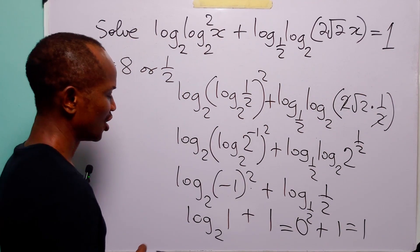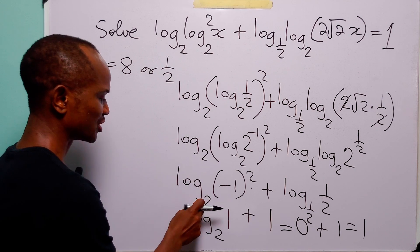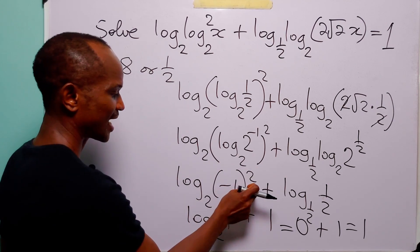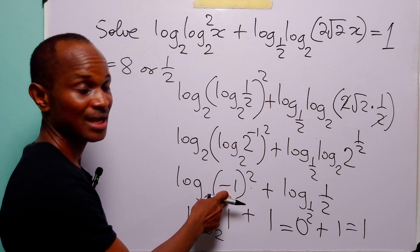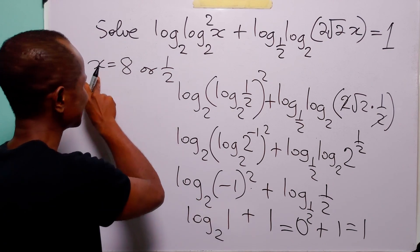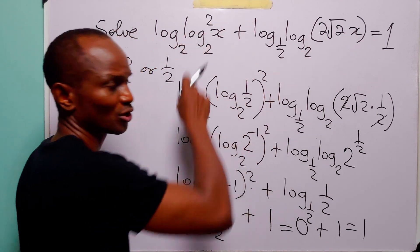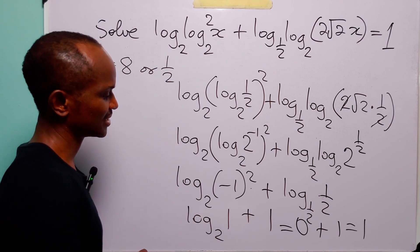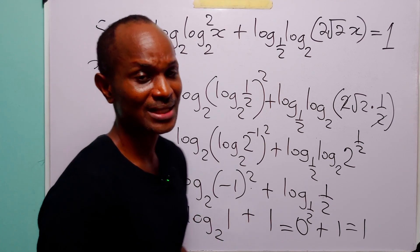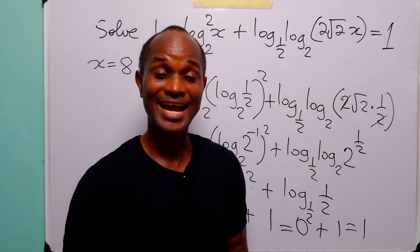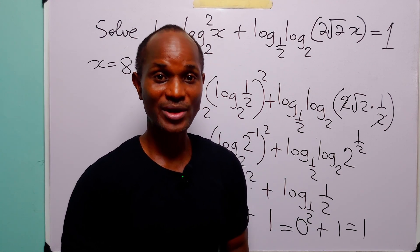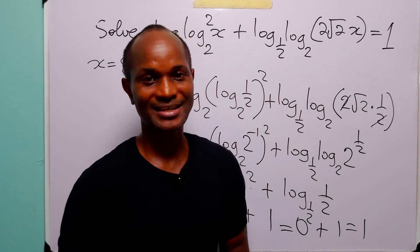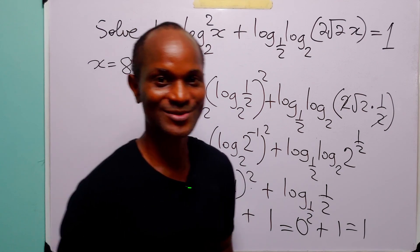But there is a problem. Notice that here we have log to base 2 of minus 1 squared. Regardless of the fact that we squared minus 1, can we really accept x equals half as a real solution to this logarithmic equation? I'd like to hear your thoughts in the comment section. With that, we come to the end of today's exercise. I hope you learned something new. If you enjoy such content, please subscribe to the channel, leave us a like, thanks for watching and see you in the next one.